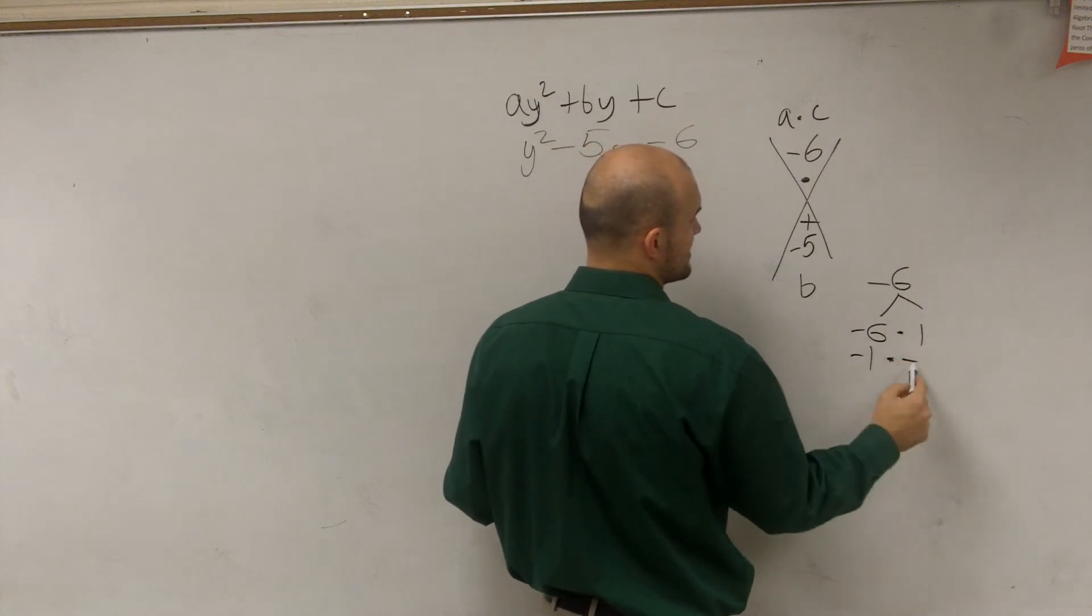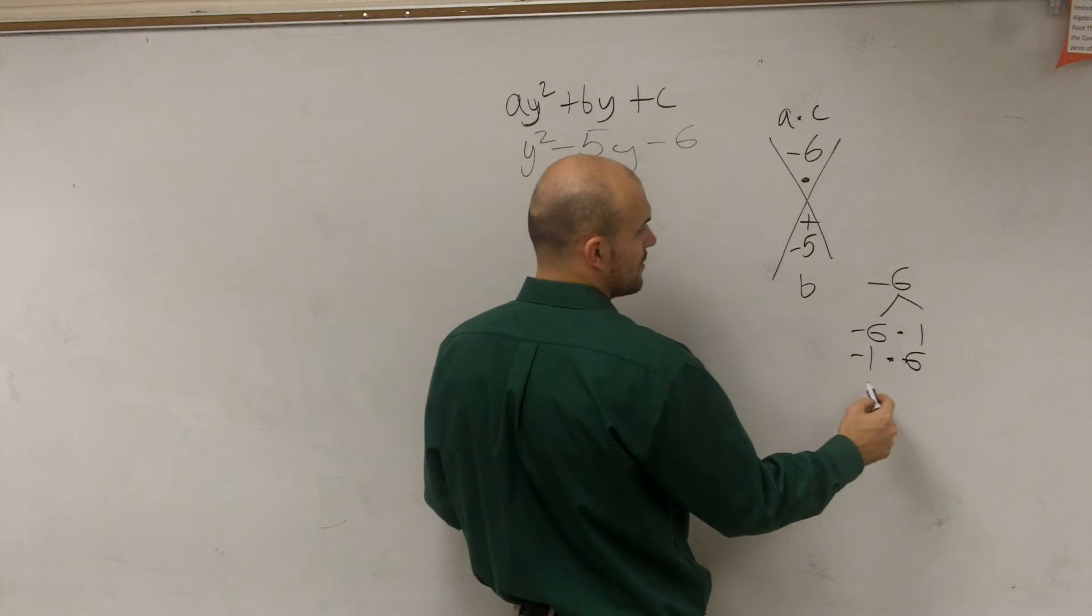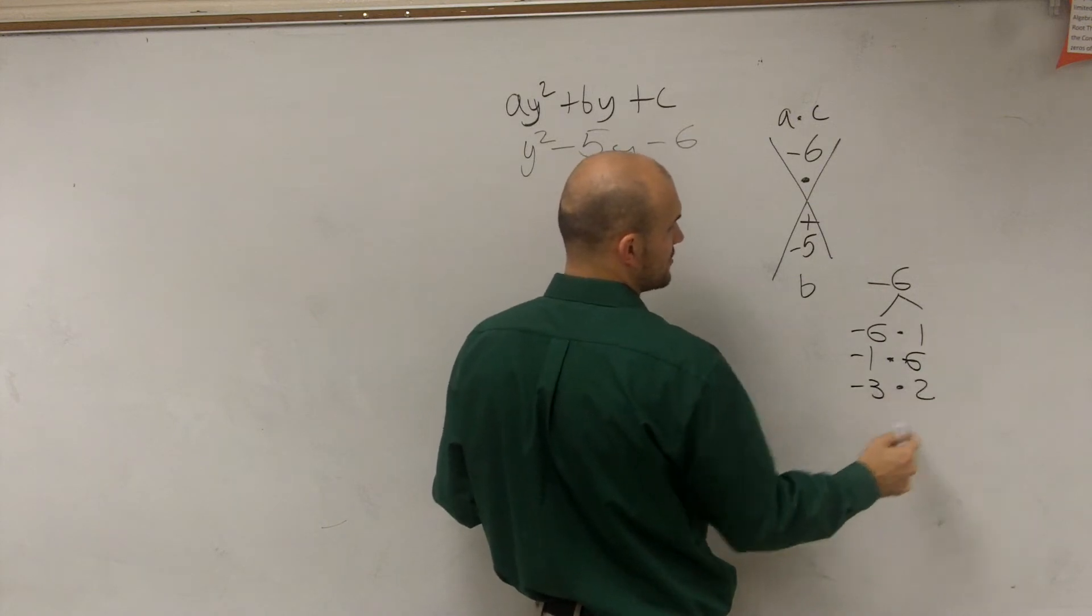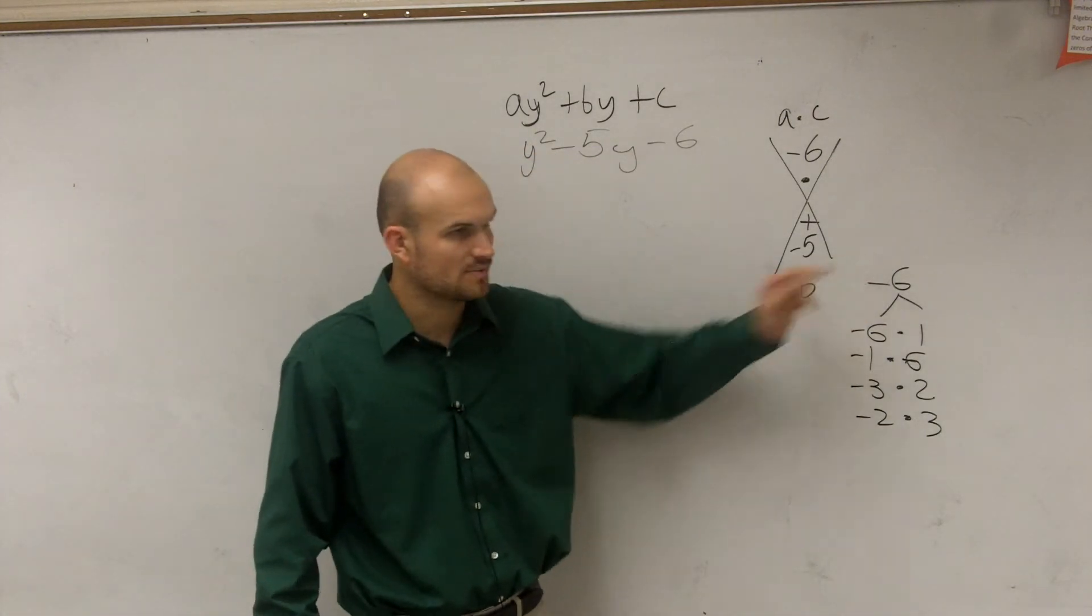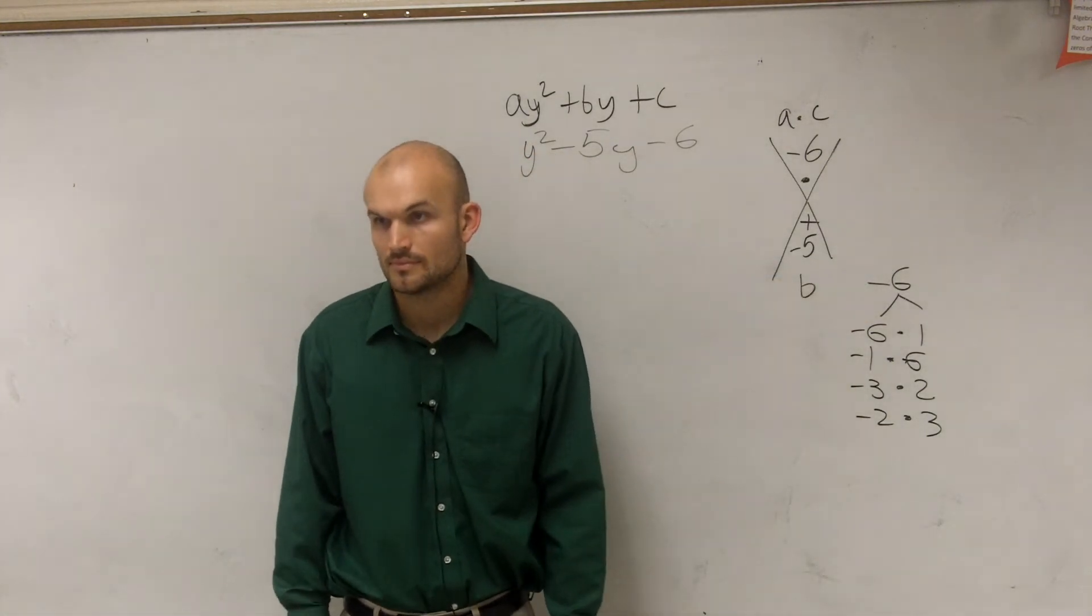I'm sorry, negative 1 times 6. You could do negative 3 times 2. Negative 2 times 3. Is that every single possible combination that will multiply to give you negative 6?